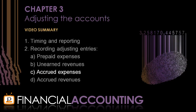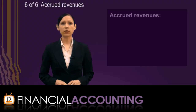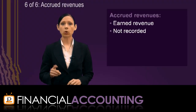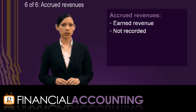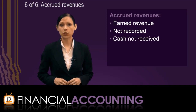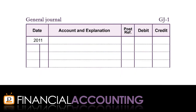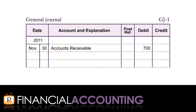After accrued expenses, the final type of adjusting entry is accrued revenues. Accrued revenues are revenues that we have earned that are not recorded in the accounts at the end of the accounting period, and for which we are due to receive the cash in a future accounting period. The journal entry for accrued revenues consists of a debit to accounts receivable for the amount of the accrued revenues, to record the cash expected to be received. The credit is recorded in the revenues account to record the revenues earned, so the correct amount of net income can be reported.